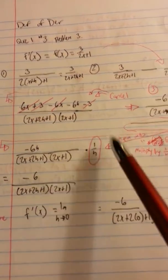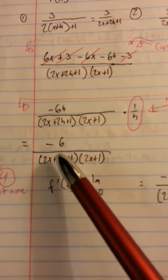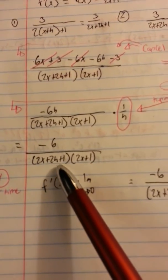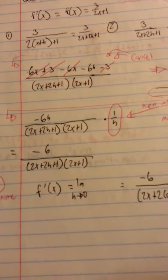Because when we multiply this, we cancel both these h's, and we're left here with minus 6 over 2x plus 2h plus 1 times 2x plus 1. Perfect! Perfect, perfect, perfect.